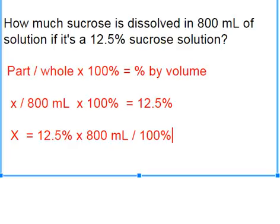Either way you're doing the same thing and you should come up with the same value. X equals — that's like maybe 50? 12.5 times 8 is 100, so it should be 100 milliliters.